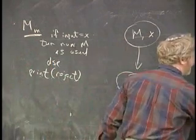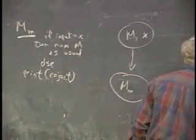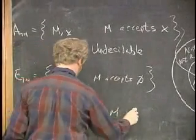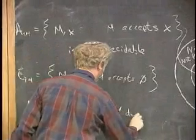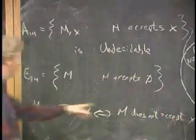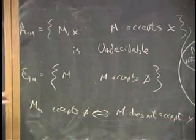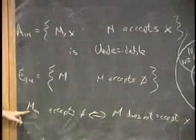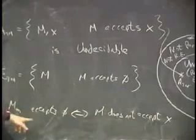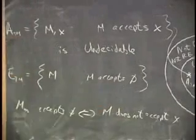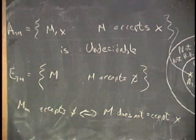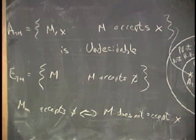The new machine M_m accepts the empty set if and only if M does not accept x. These two things are equivalent. So when I get an answer from you about whether this machine accepts the empty set or not, then I've got an answer to my original question. If you say it accepts the empty set and that's nothing, then I know my original machine doesn't accept x. And if you tell me it accepts something, then I know my original machine accepts specifically x. And that's the answer, yes.